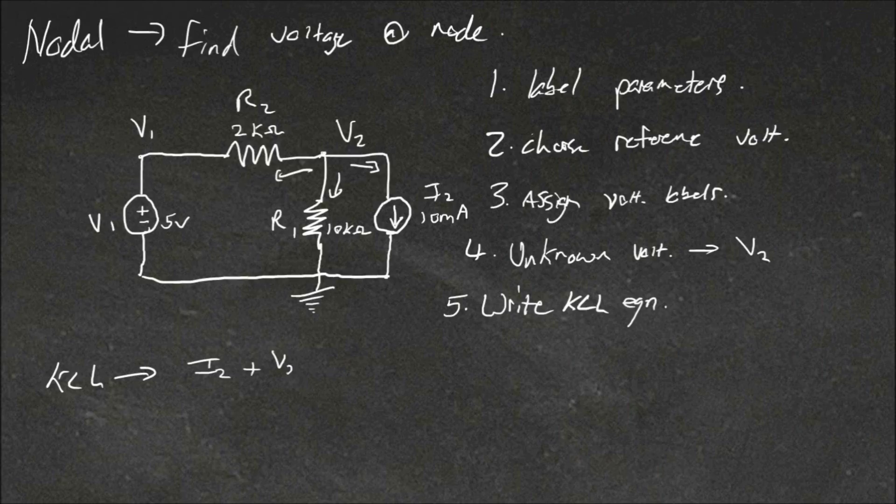So our KCL equation on this would be on the first one, we know it's I2. So the current going this way plus the current going through this resistor. So that's V2 minus 0 over R1. So the difference in potential divided by the resistance, V equals IR. But because it's minus 0, we could just write V2 over R1. And this is plus V2 minus V1, the difference in potential between these two points divided by the resistance there, which is R2. And the summation of these currents should be 0.